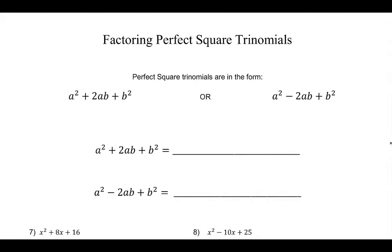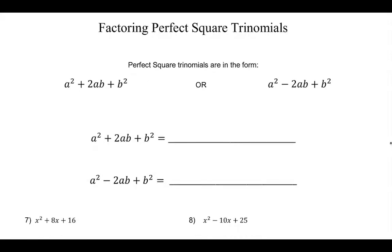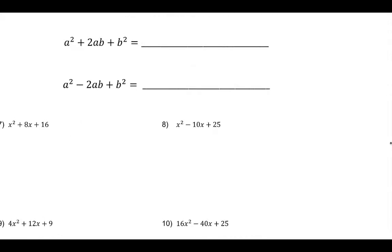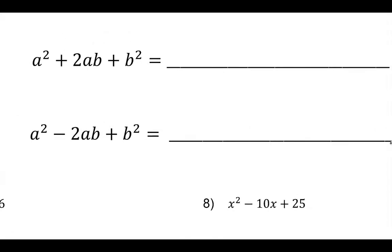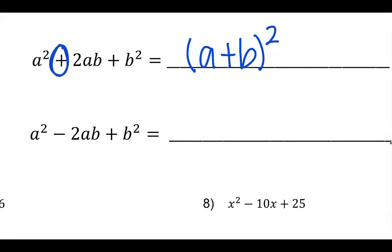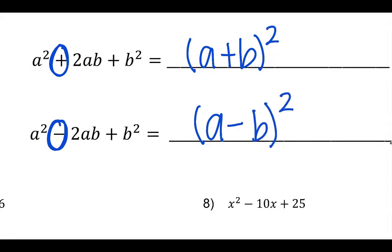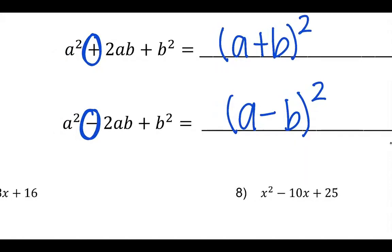Now, factoring perfect square trinomials. Here are the forms: a squared plus 2ab plus b squared is going to factor as a plus b squared. And it's because of this plus sign here. If it has a minus sign here, that's the only difference between the two — then you're just going to make it a minus b squared.